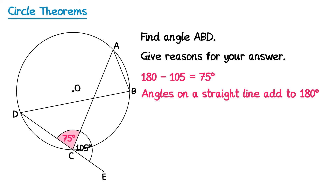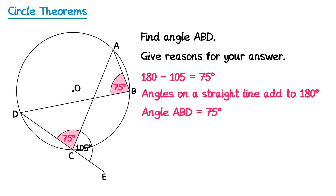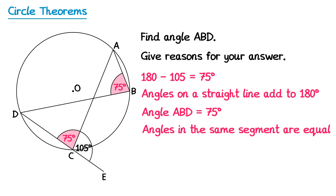Now we can use one of our circle theorems to find angle ABD. This looks like the bow tie theorem — the first one we did. So the red angle we just found is actually the same as angle ABD, meaning it is also 75 degrees. We could say that angle ABD equals 75 degrees, and the reason is that angles in the same segment are equal.